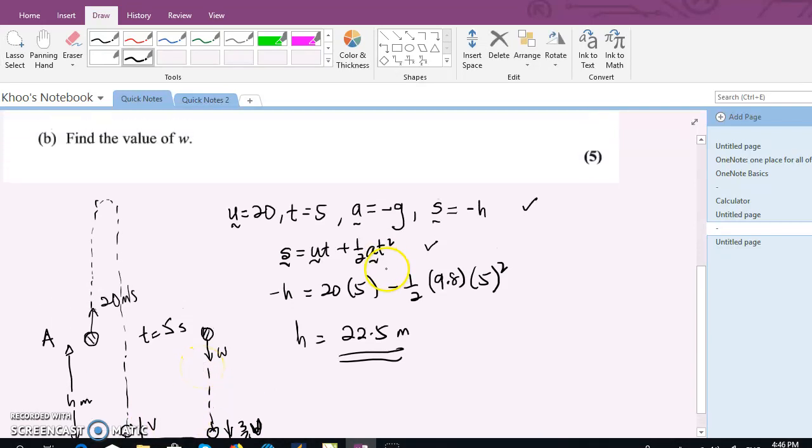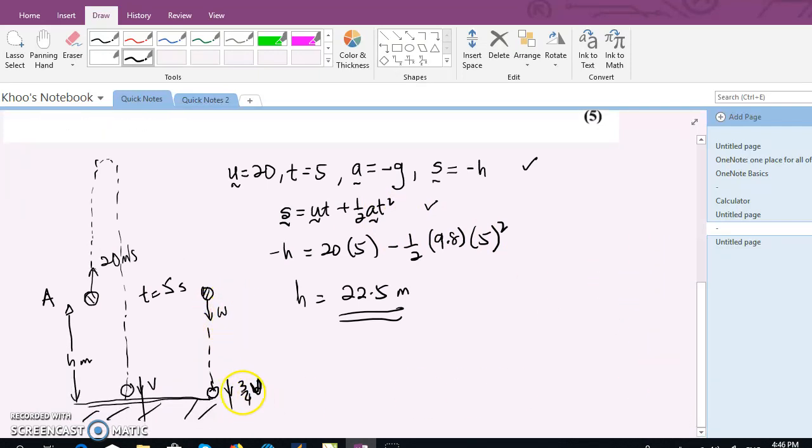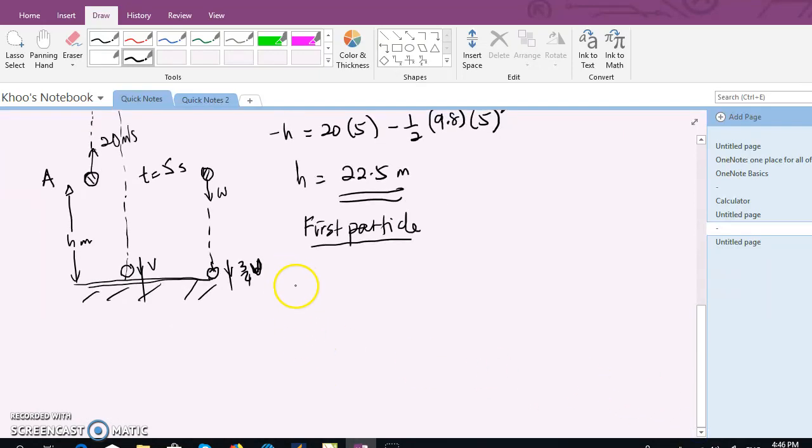What we can do now is use this information and solve. Obviously, in order to get the value of w, we need to know what's v. To know the value of v, we use the first particle. So let's consider the first particle again. Here is the first particle. It will always be good if you specify what you're doing, so writing down 'first particle' makes a lot of sense.